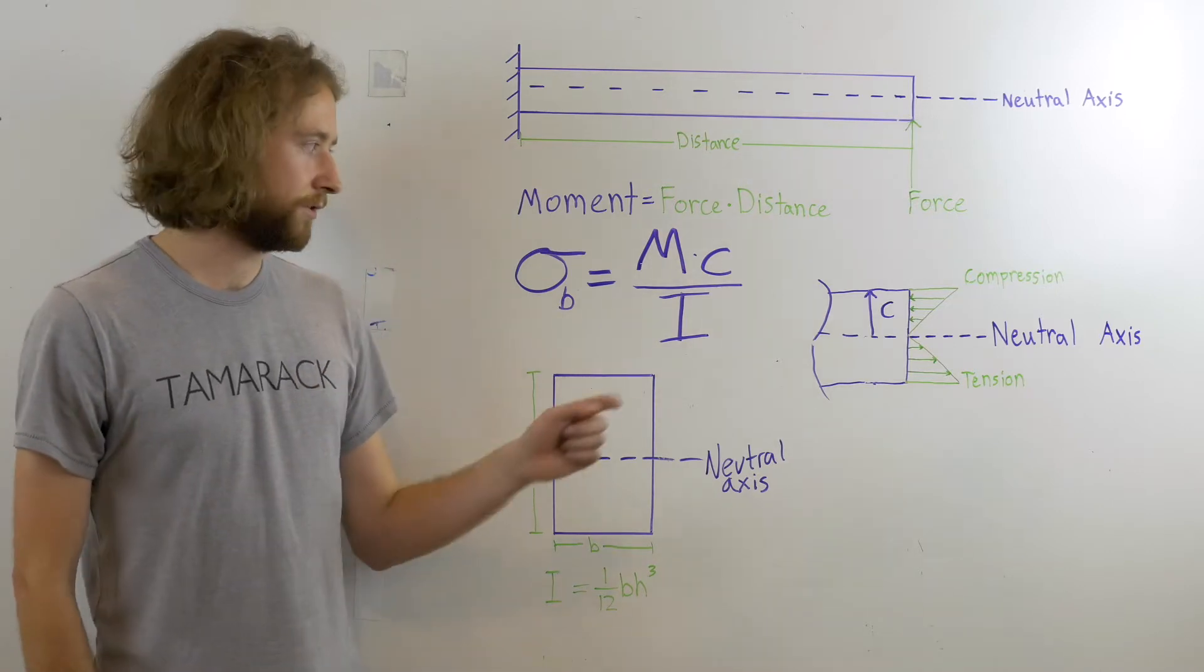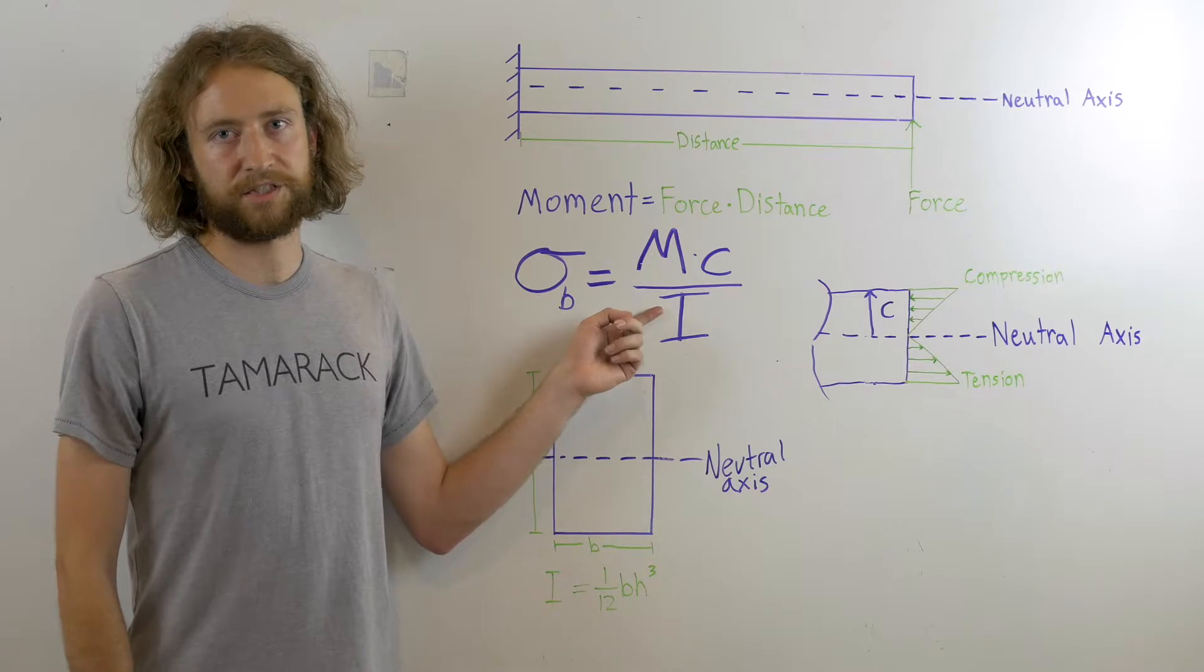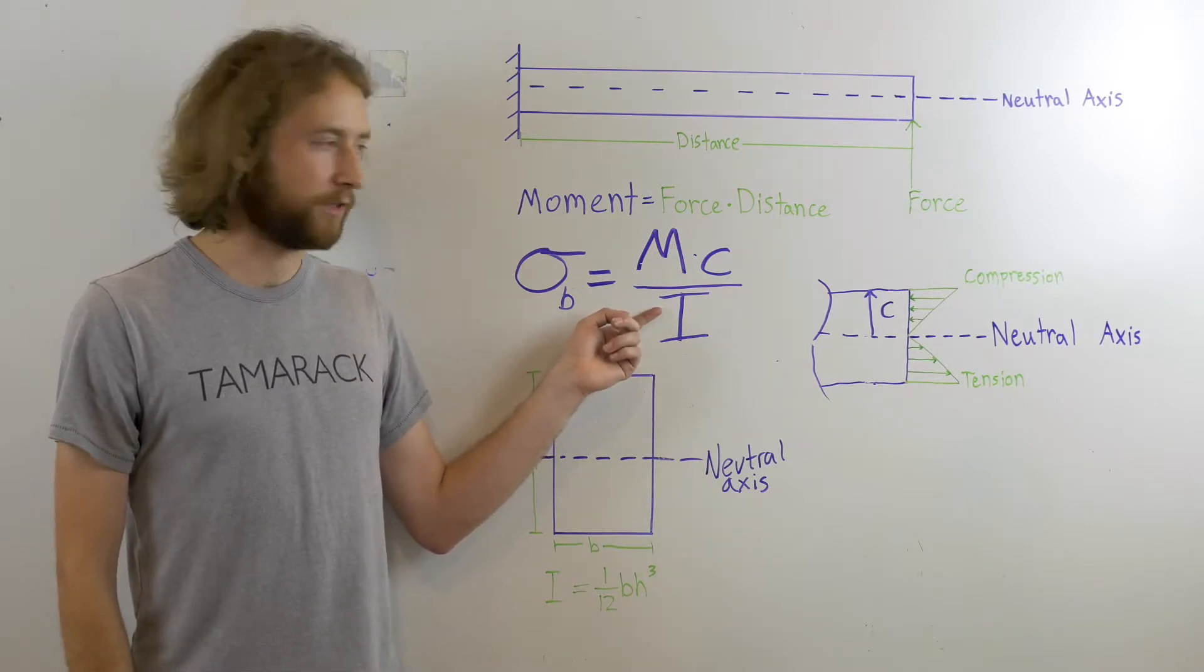The final part of this equation is i, the moment of inertia. The moment of inertia is a geometric property based on the size and the shape of your cross section.